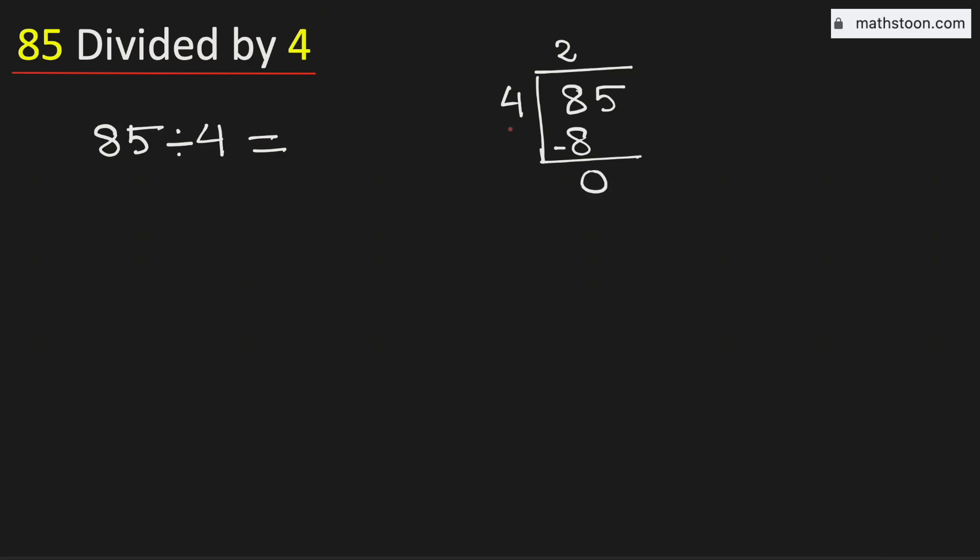As 0 is less than 4, we will bring down this number 5 here. See that this is the number 5.